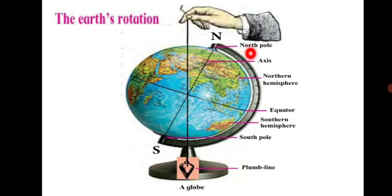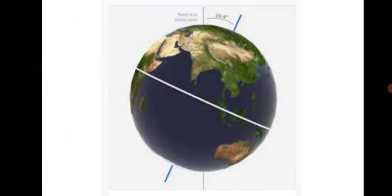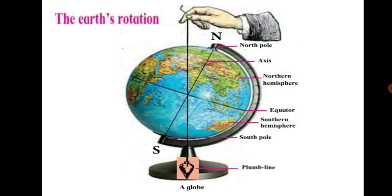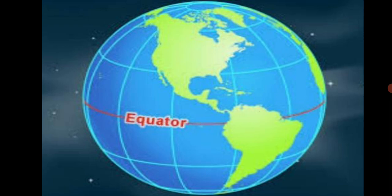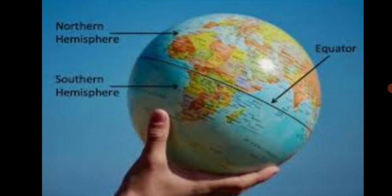The points N and S are called the poles of the Earth. N is the North Pole and S is the South Pole. If a circle is drawn around the surface of the Earth exactly in between the North and South Poles, it would divide the Earth into two equal parts. This imaginary circle is called the equator. The two equal parts are called the Northern Hemisphere and the Southern Hemisphere respectively.